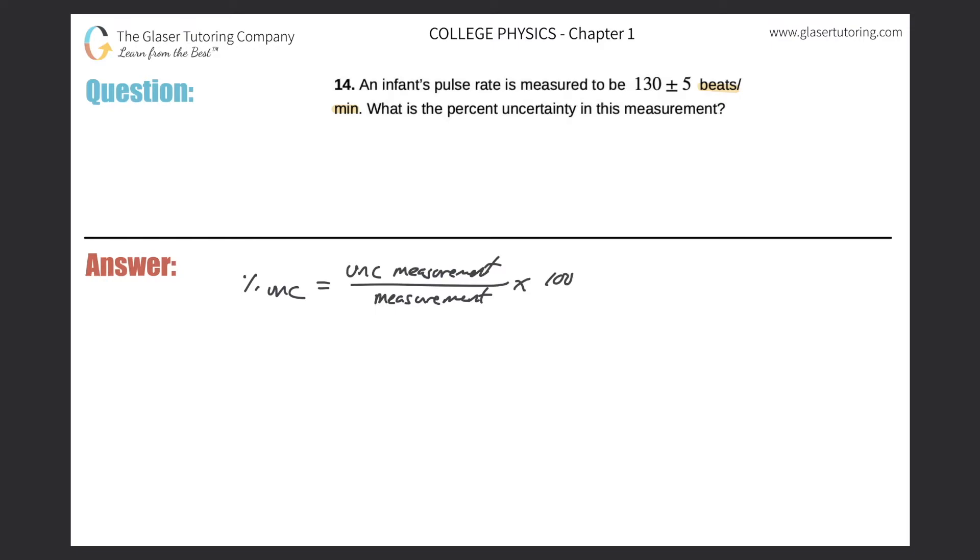So let's go back to what's given in the question or in the problem. So an infant's pulse rate is measured to be 130 plus or minus 5 beats per minute, right? So in that number, 130 plus or minus 5,